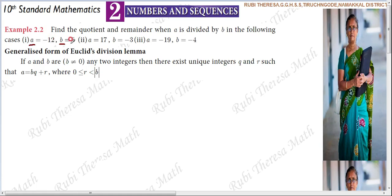The given values are: A equals minus 12, B equals 5 for the first case; A equals 17, B equals minus 3 for the second case, where the divisor is minus 3.